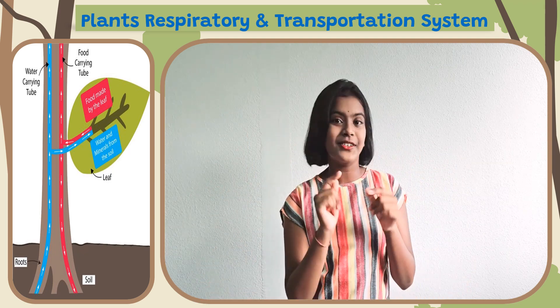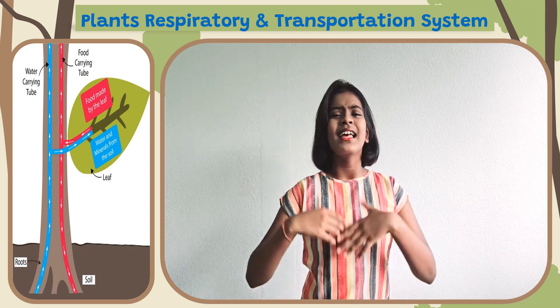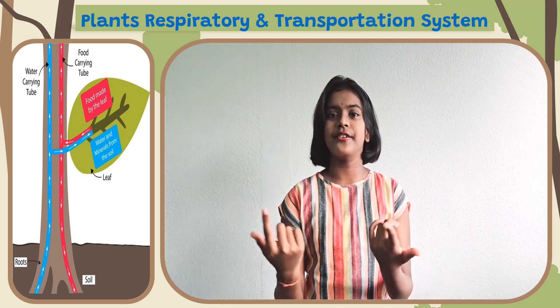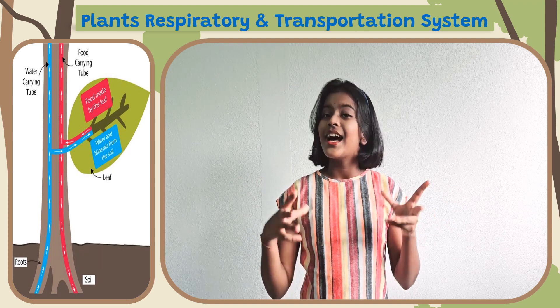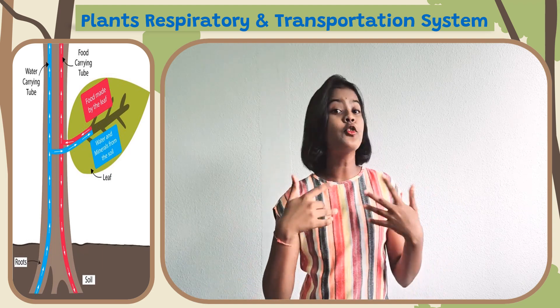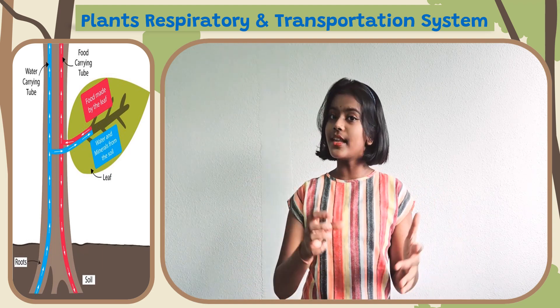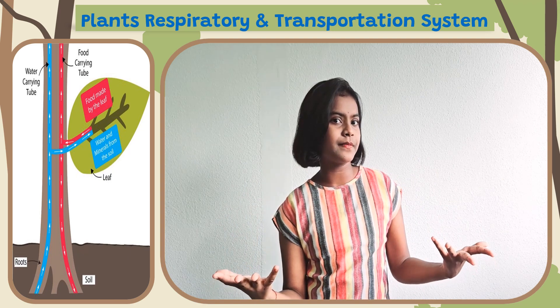Yes, you guessed it right. These tubes are shaped like a ring. The outer layer are food carrying tubes and the inner layer are water carrying tubes.